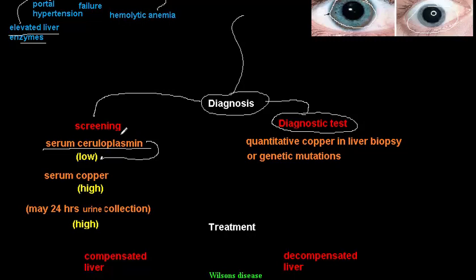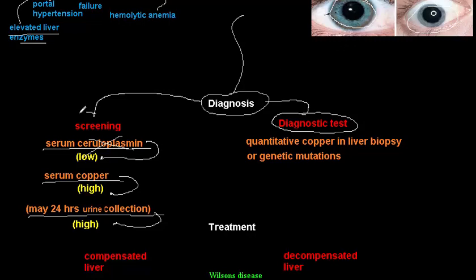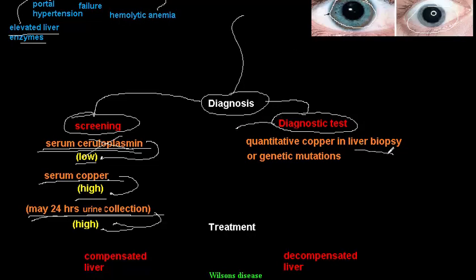Serum ceruloplasmin is low because there is no incorporation of copper with the ATP7B protein. Serum copper is high due to accumulation in blood, liver, and other organs. A 24-hour urine collection will show high copper levels, since copper that isn't excreted in bile is redirected to the kidneys. These are screening indicators to suspect Wilson disease.